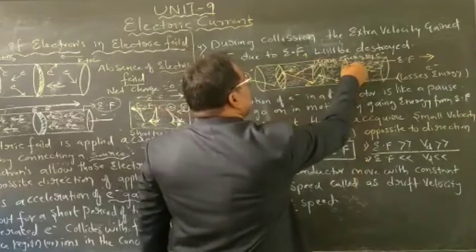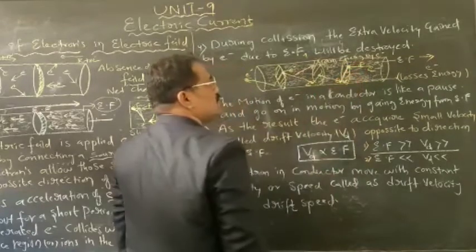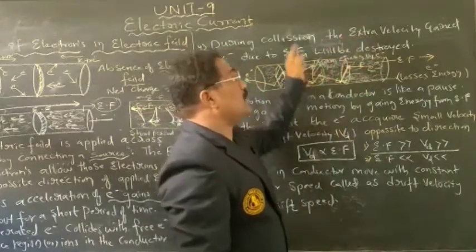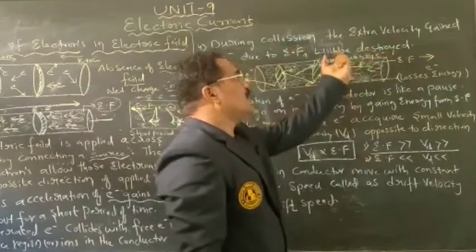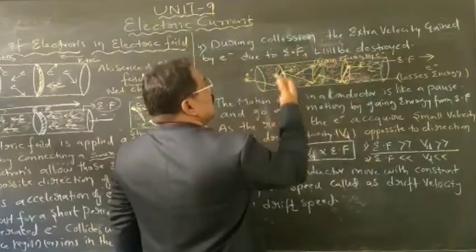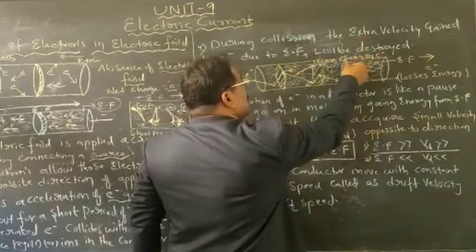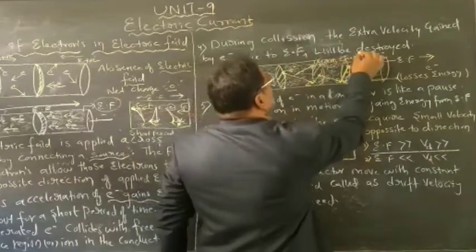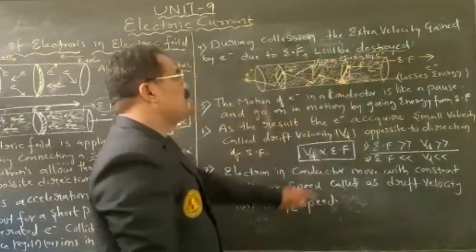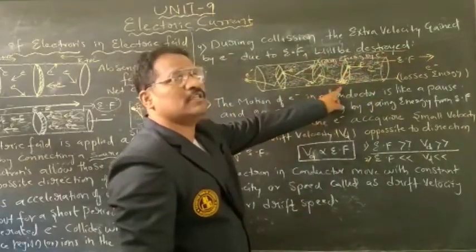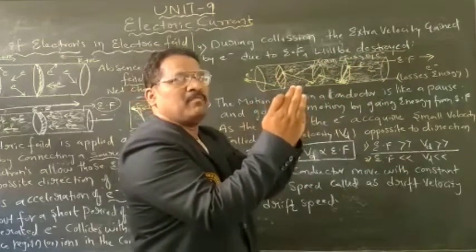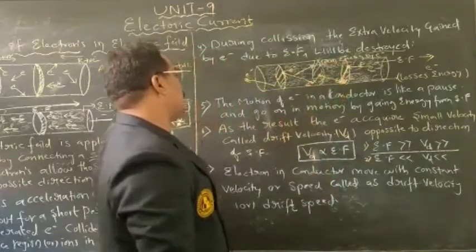After the collision, the electron decelerates — its velocity gradually decreases. The energy gained by the electron is gradually decelerated due to the electric field, and eventually the electron comes to a paused position, stopped within the first microsecond inside the current-carrying conductor.